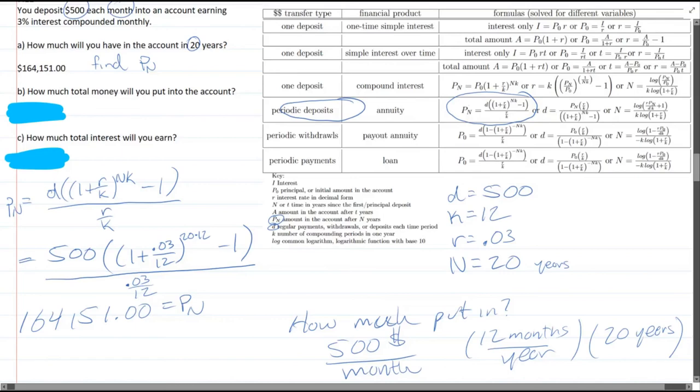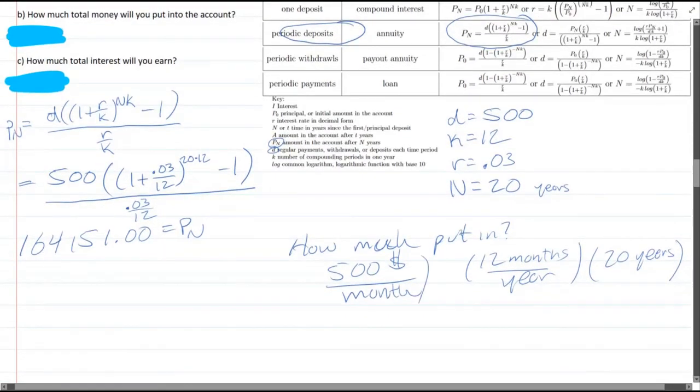I shouldn't be lazy with writing units. This is $500 per month. Now, if you remember unit cancellation from before, month cancels months, year cancels years. And what units are you left with? Just dollars.